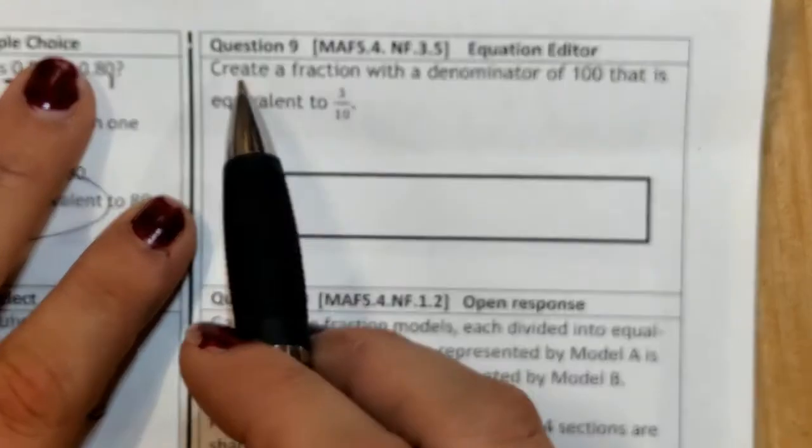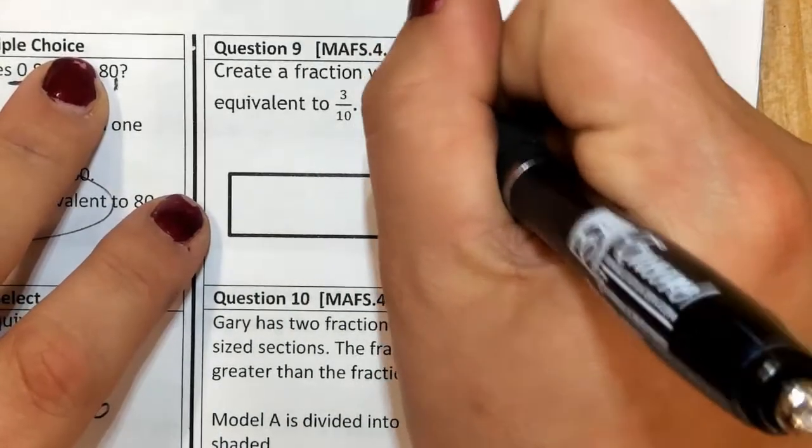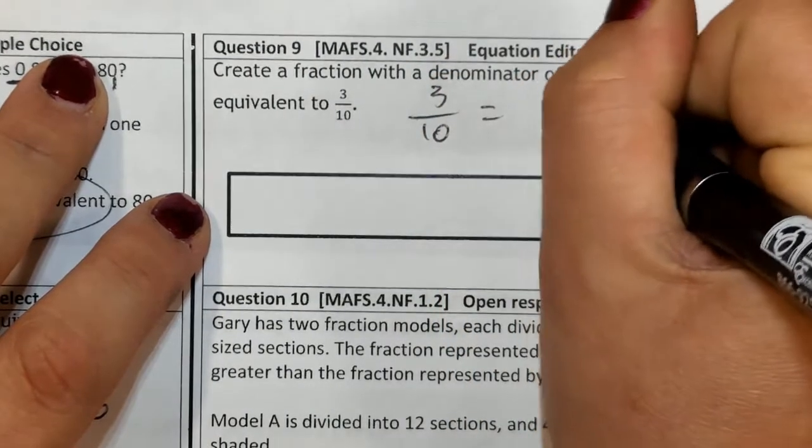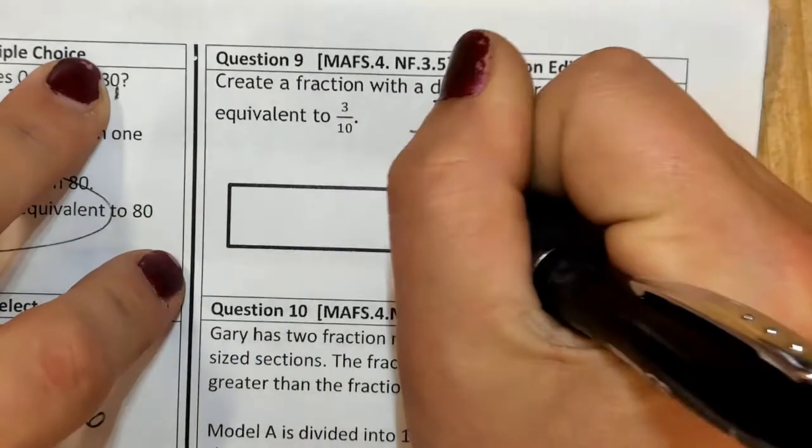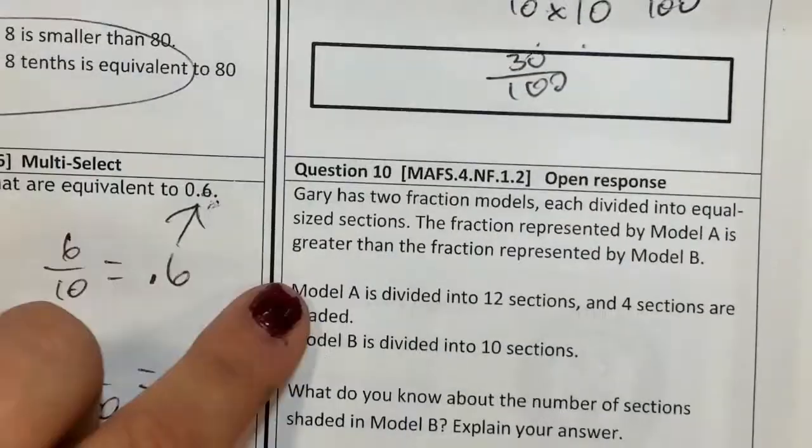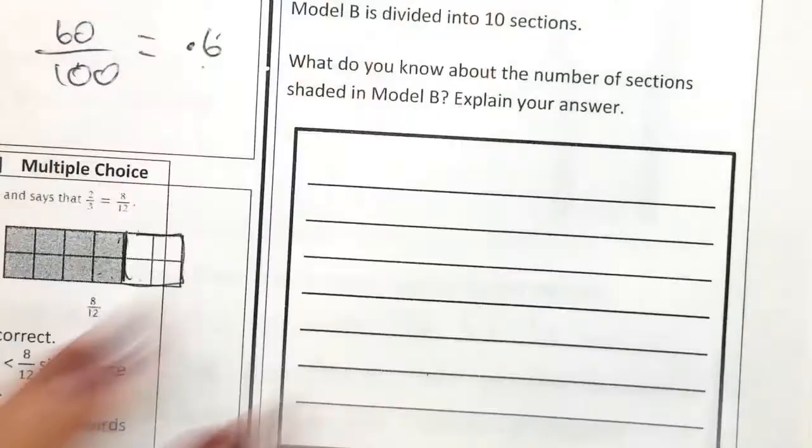Number 9, create a fraction with a denominator of 100 that is equivalent to 3 tenths. If we want to get 3 tenths to a fraction with a denominator of 100, what do we multiply by? We multiply by 10. What we multiply to the bottom, we must do to the top. So 30 hundredths. And I'm going to have you guys do this last one on your own. I will go through the answer on it tomorrow. That was the wrap-up for Monday, week 2, day 1. If you have any questions or concerns, don't be afraid to reach out to me. I'll see you later. Bye-bye.